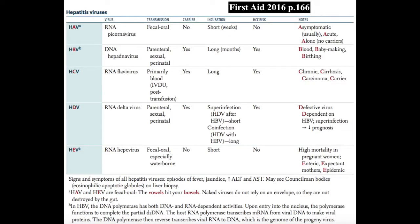There are five different viruses that can cause hepatitis, all of them from different viral families. However, the signs and symptoms are very similar: episodes of fever, jaundice, and elevated ALT and AST.